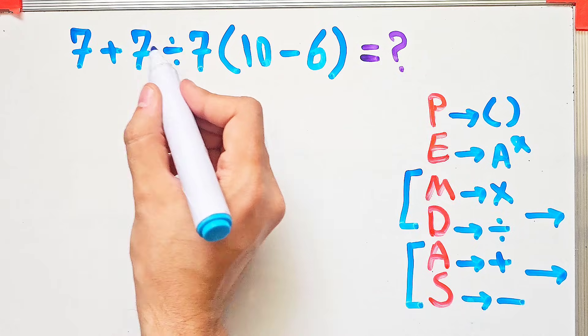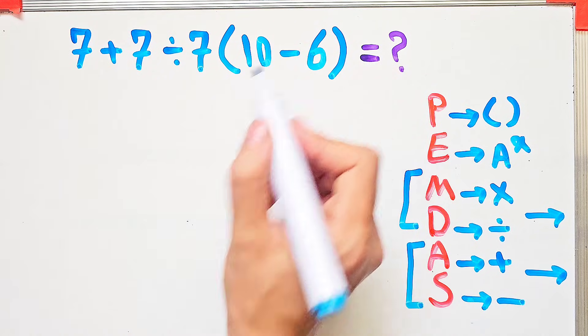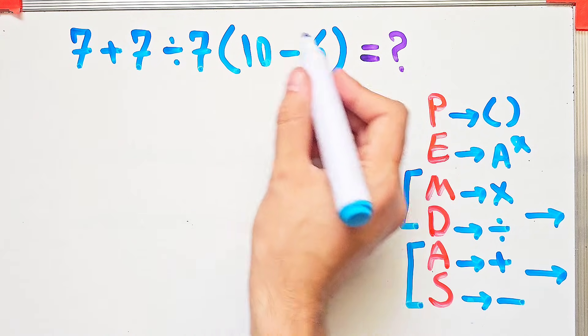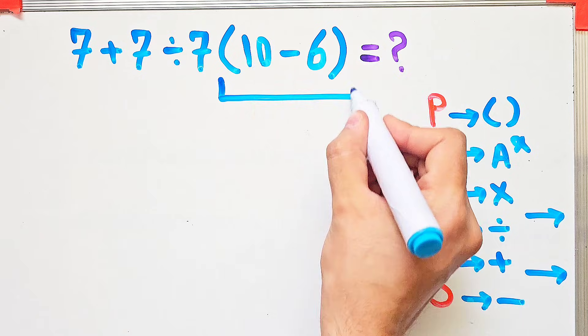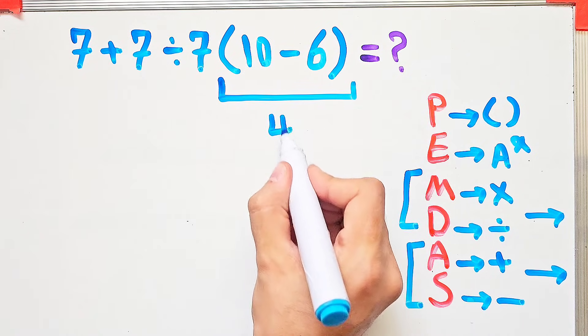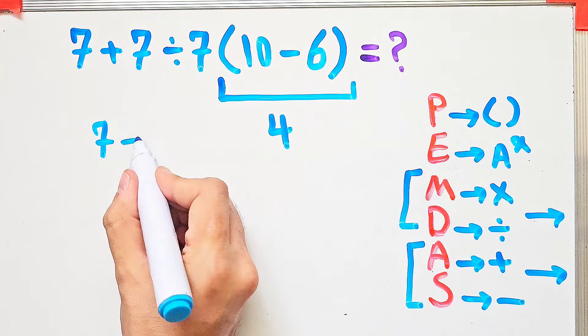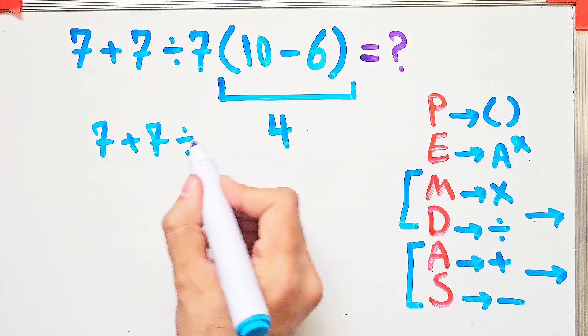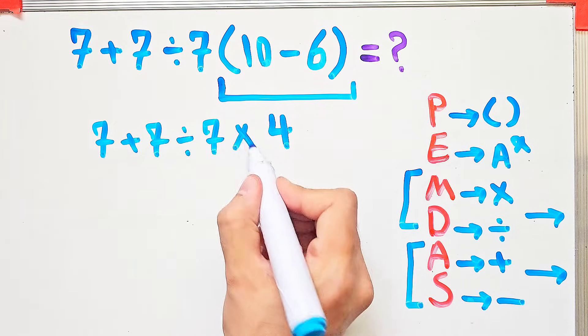In this question, first we simplify the parentheses. 10 minus 6 equals 4. Now we have 7 plus 7 divided by 7 times 4.